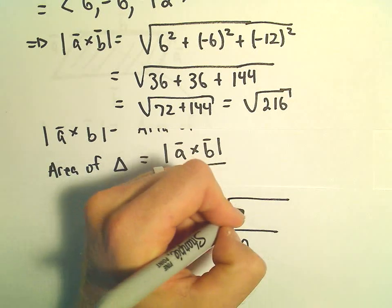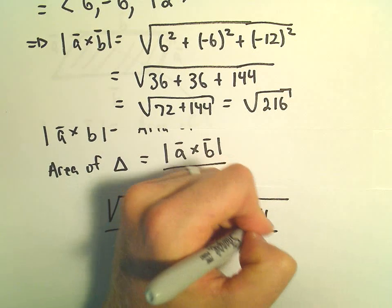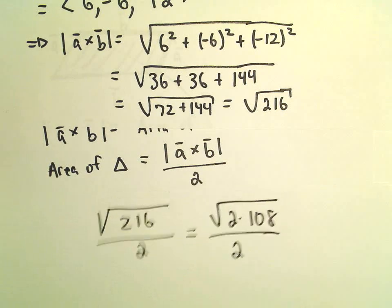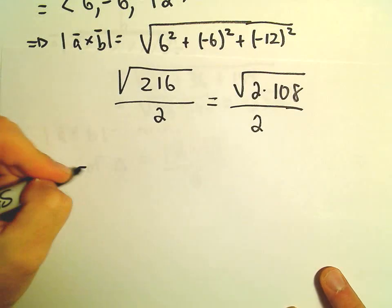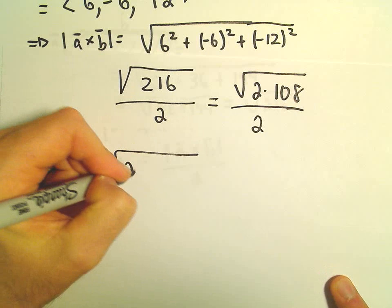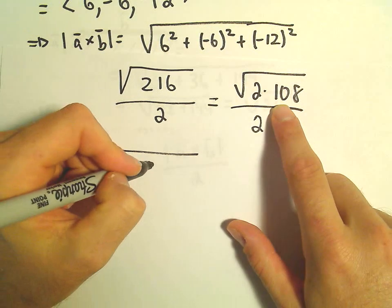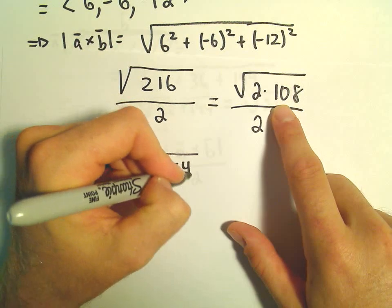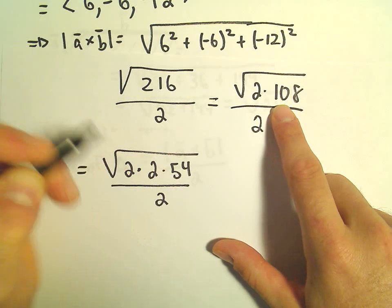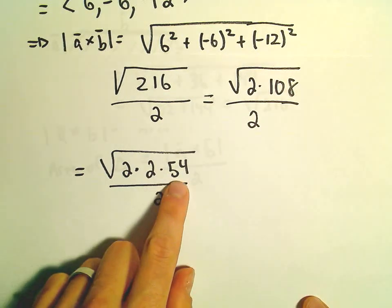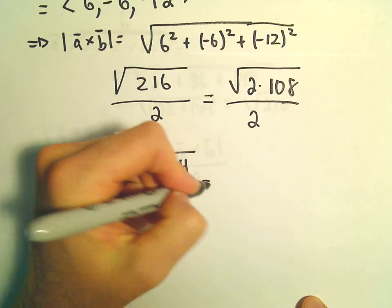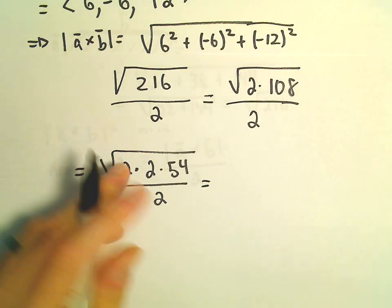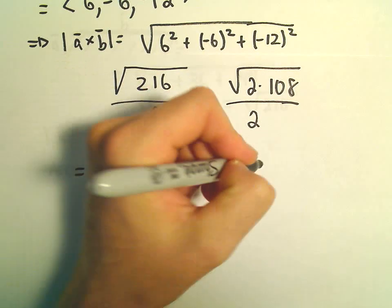So we can always write 216 as 2 times, I guess, 108. We can always break down 108 a little bit further. So 108, we could write that as 2 times 54, all over 2. We have 2 times 2, so this is a 4. So I'm going to bring that out as a 2.